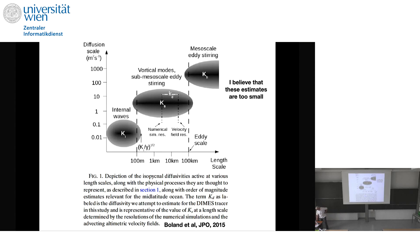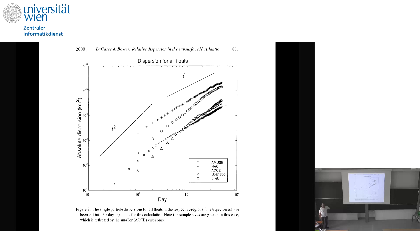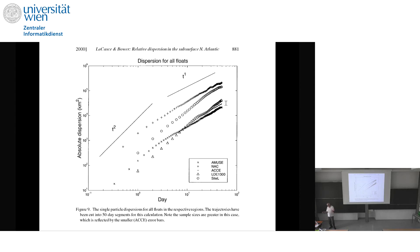Here's the dispersion for all of the floats in several experiments — the northeast Atlantic experiments, the LDE, and everything done in either the northeast or northwest Atlantic. Shown here is the t² behavior for small time lag and the t behavior for large time lag — this is from the data and this is from the theory — with error bars on the estimates. Qualitatively it looks okay.